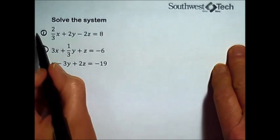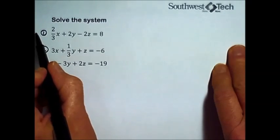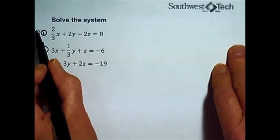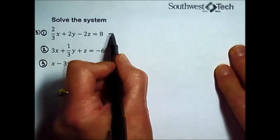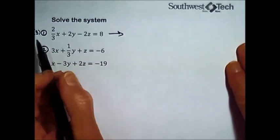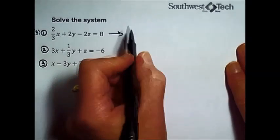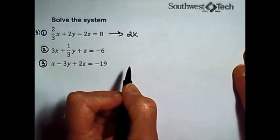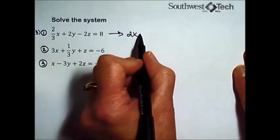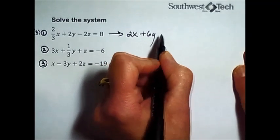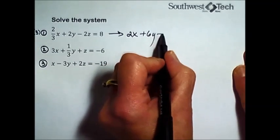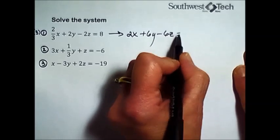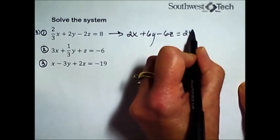For equation number one, let's get rid of that denominator of three by multiplying every term by three. That transforms it: three times two-thirds x cancels out the three, leaving just 2x. Three times 2y is 6y, three times minus 2z is minus 6z, and three times 8 is 24.